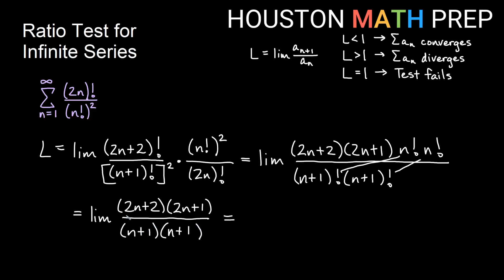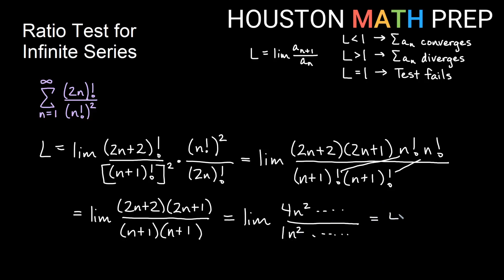Expanding the numerator gives a leading term of 4n^2, and expanding the denominator gives a leading term of n^2. Comparing lead coefficients of the same degree gives a limit of 4. Since this limit is greater than 1, the original series diverges by the ratio test.